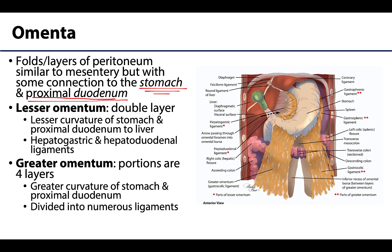The lesser omentum is like a mesentery in that it's a double layer of peritoneum. It's going to extend from the lesser curvature of the stomach — and it also extends to the proximal duodenum. It can be subdivided into peritoneal ligaments, which is a different name for the same thing broken into more specific parts, giving a better indication of location. You'll have a hepatogastric portion and a hepatoduodenal portion, both parts of the lesser omentum.